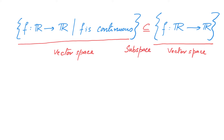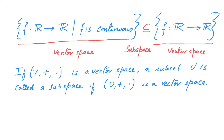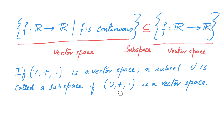More generally, if we have a vector space where we denote the addition by plus and scalar multiplication by dot, then a subset U is called a subspace if U along with the same operations plus and dot is a vector space.